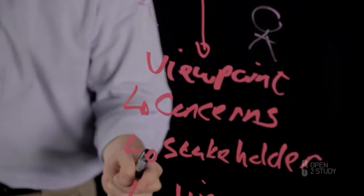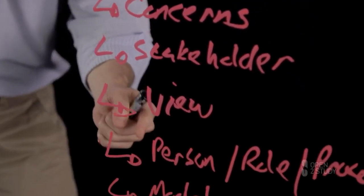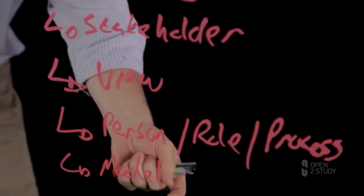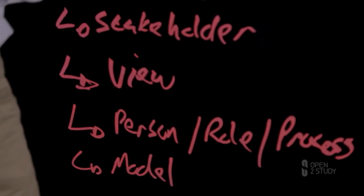Well, here's the recipe that tells me how to create that view. There are concerns. There's a stakeholder. There's a description of the view. There are all the building blocks that we're going to need to assemble to be able to develop that view. And by the way, that's the model that we're going to use to be able to assemble it.